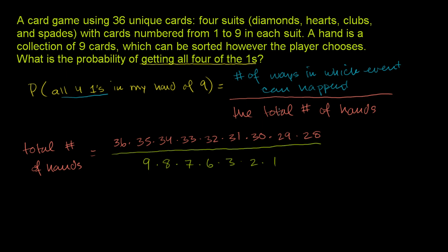This expression right here is the same thing, just so you can relate it to the combinatorics formulas you might be familiar with. And this is the same thing as 36 factorial over 36 minus 9 factorial, divided by 9 factorial. What's green is what's green, and what is orange is what's orange there. So that's the total number of hands.